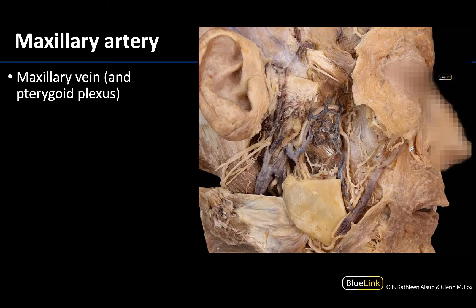We're going to start with the veins because they are the most superficial and one typically needs to remove them to get a clearer view of the deeper arteries and certainly in terms of the mandibular nerve. This whole complex right here — I'm just going to circle the general region — is going to be part of the pterygoid plexus of veins, which is a collection of small veins in the general location of the pterygoid muscle, draining that particular region.